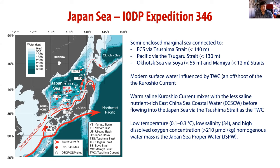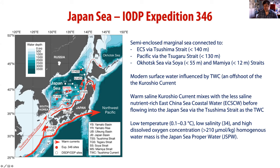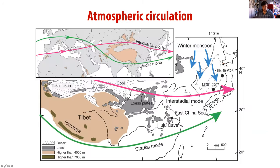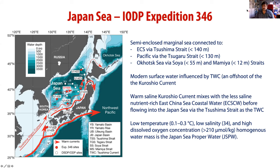The Japan Sea is also connected to the Pacific through the Tsugaru Strait and to the Okhotsk Sea via the Soya and Mamiya Straits. The key thing about these straits is that they're really shallow — the maximum depth of the Tsushima Strait is 140 meters. This has bearing on what happens during glacial-interglacial shifts in sea level. Modern surface waters are influenced by the Tsushima Warm Current, which mainly derives from the Kuroshio Current, which circulates warm waters northward in the northwest Pacific.